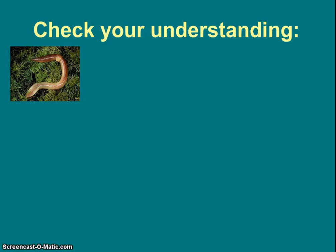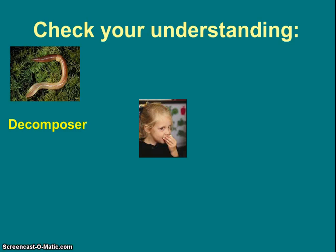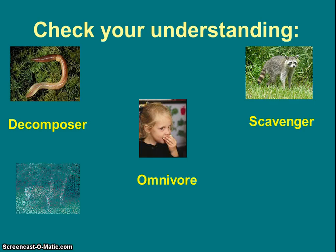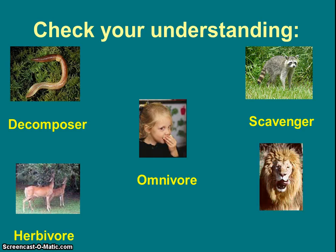Let's check your understanding. What was a worm? A decomposer. What about a human being? An omnivore. Next, a raccoon — it was a scavenger; they don't go out and kill food, they find dead things. Then we have deer: they're eating plants, so they're an herbivore. And the lion — that's our carnivore. Did you need to write this all out? No, if you already had examples for Roman numeral two with all five vocab words, this was just extra practice.